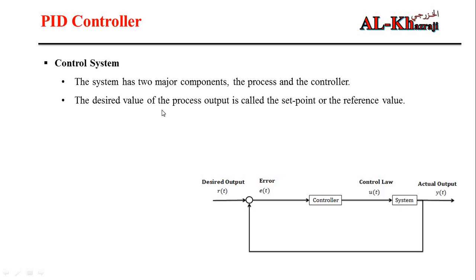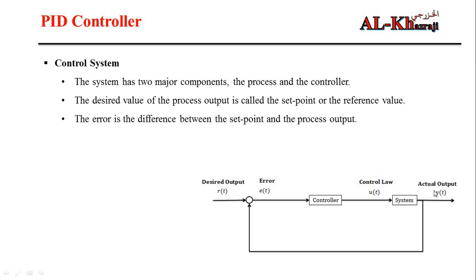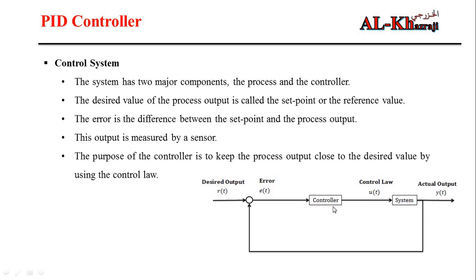The desired value of the process output is called the set point, the desired output, or the reference value. We have the actual output, which is the real output of the system, and the desired output or set point. The error is the difference between the actual output and the set point. We assume the output is measured by a sensor, and the purpose of the controller is to keep the output of the process equal to the desired output.